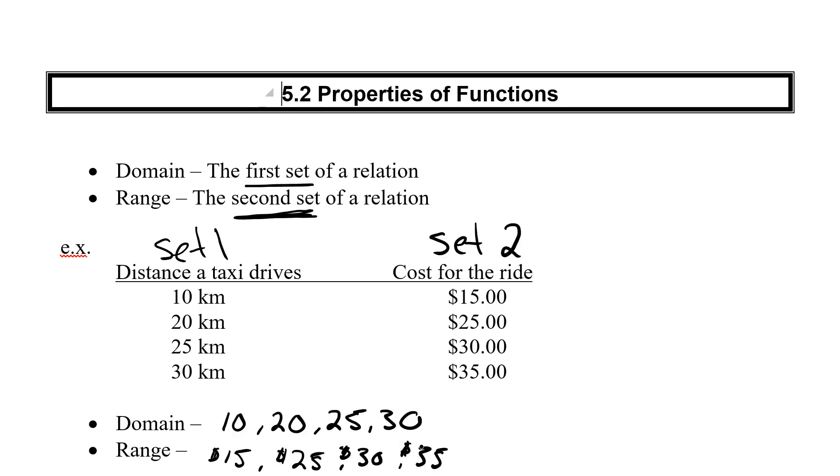In this case, I've got actual set numbers. We call these discrete values. If I've got set numbers or discrete values, I've got actual numbers for my domain and my range. If I had a range of values, I'd express domain and range a little bit different, but that will come in future lessons.